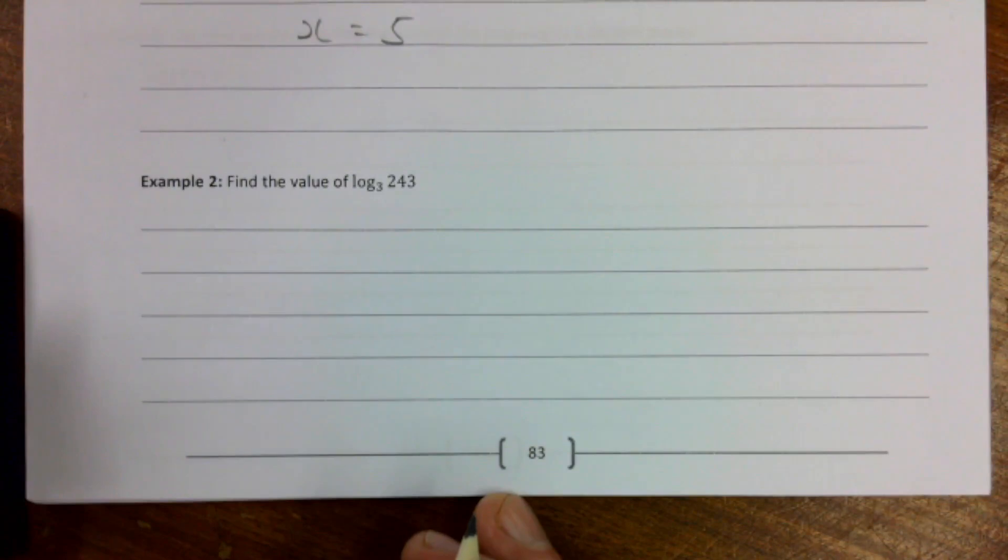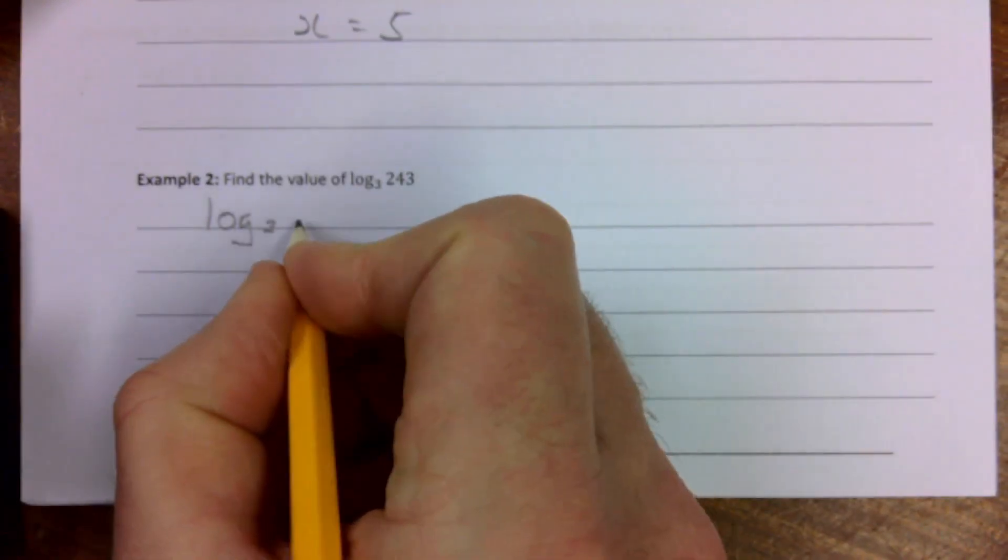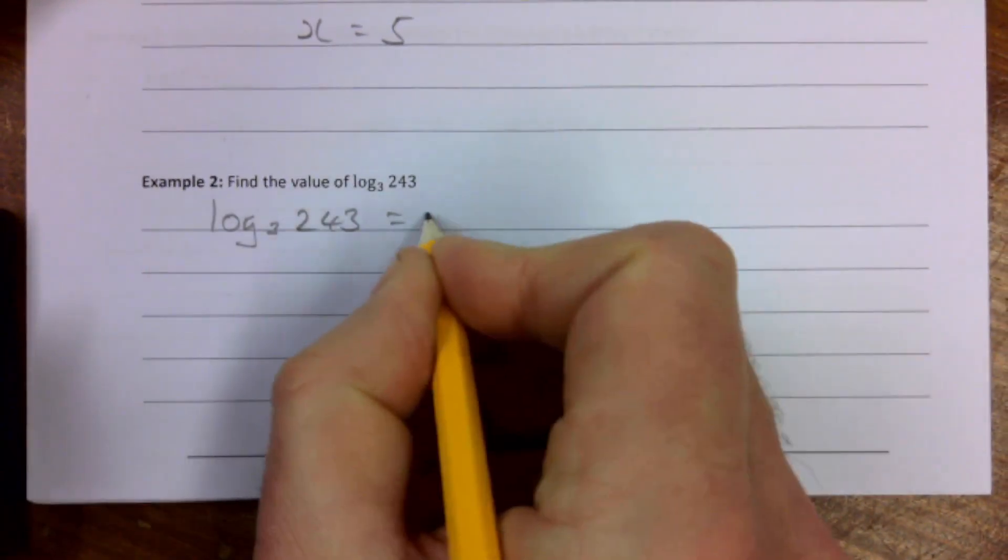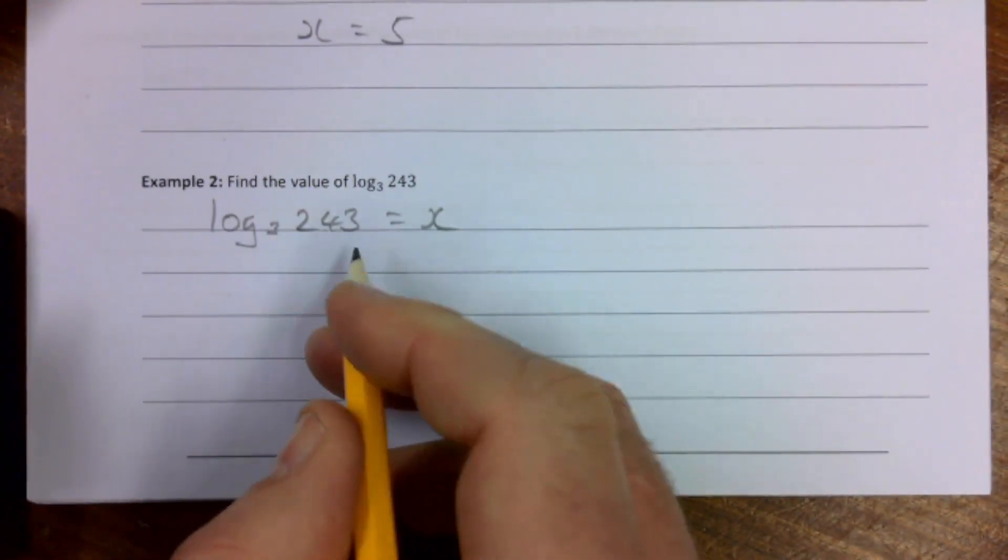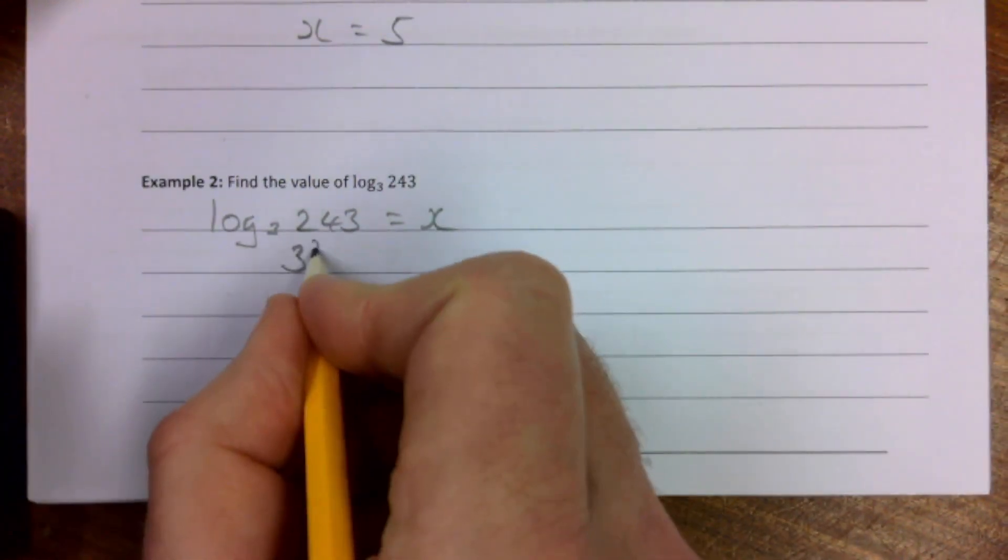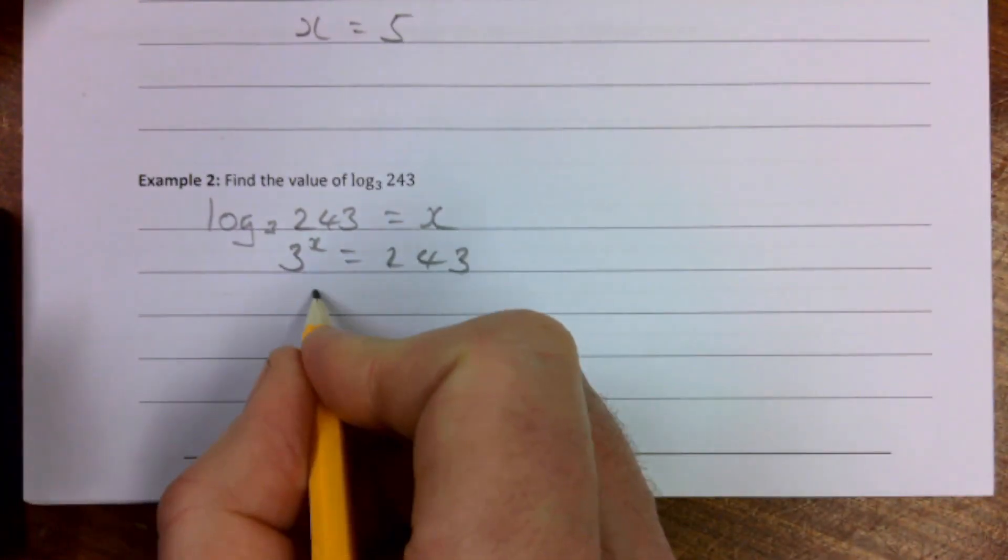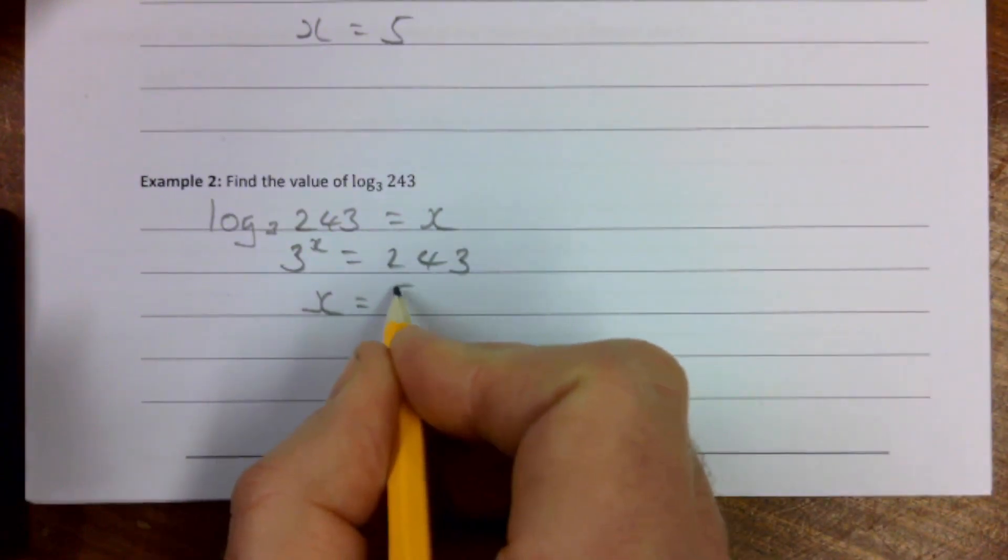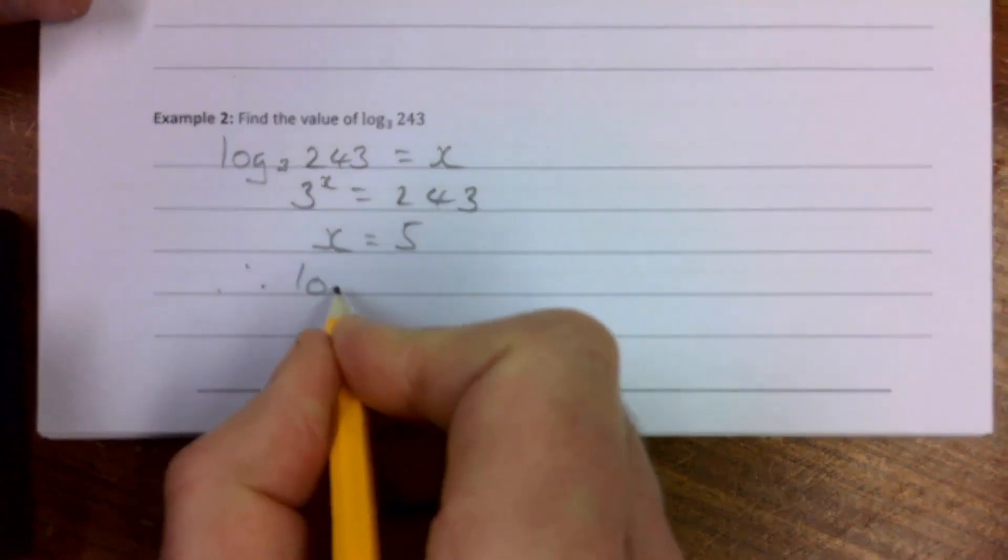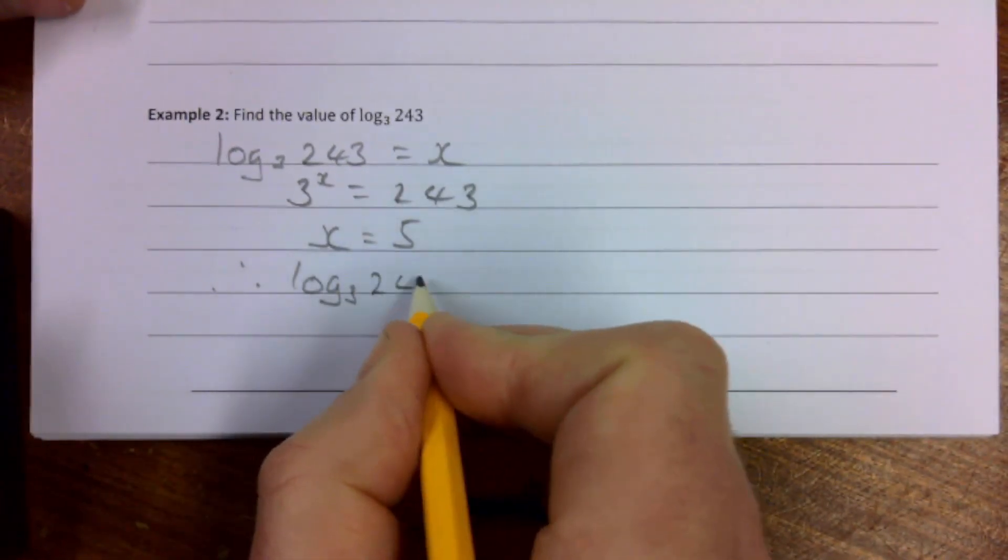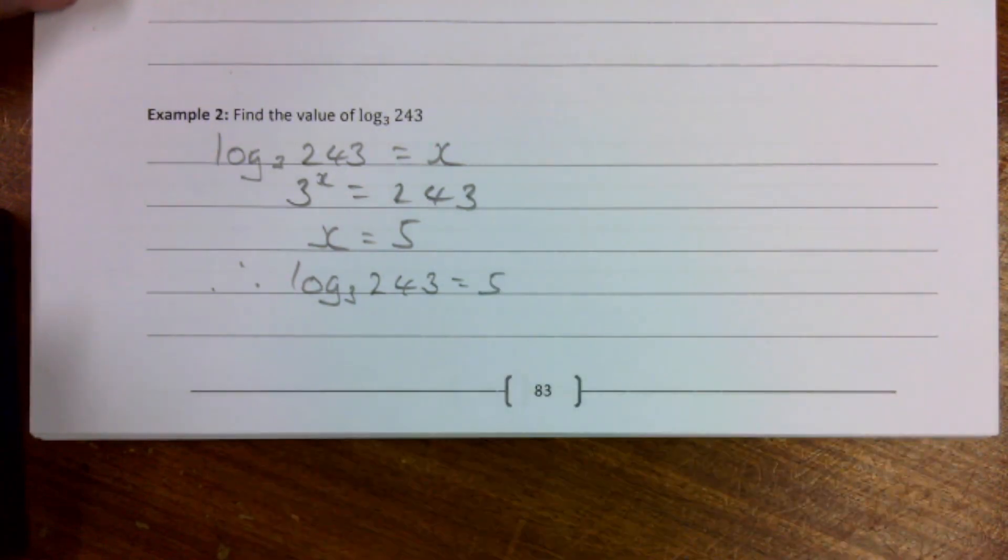Similarly then for example 2, log to the base 3 of 243 equals x. Just the same question really with different numbers. 3 to what power gives me 243? I.e. 3 to the power of x is 243. It doesn't take you too long. We have a calculator to check that out if you don't happen to know it. We get x equals 5. Therefore of course log to the base 3 of 243 equals 5.